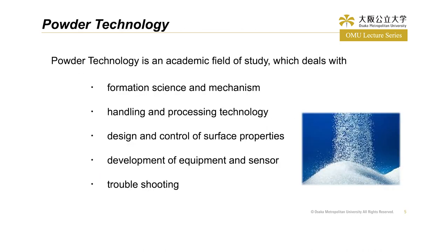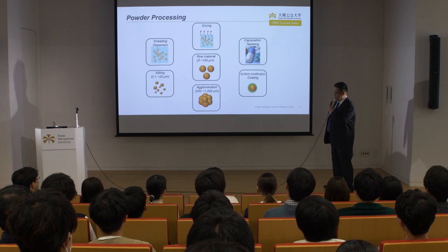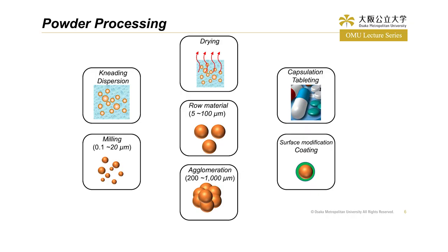Powder technology was born to understand the powder behaviors. Powder technology is the academic field of study which deals with formation science and mechanism, handling and processing technology, design and control of surface properties, and development of equipment and sensors. Also, powder technology deals with troubleshooting. As I explained, there are so many powder processing steps. In reality, if we want to make some powder product, we need to use several processes — for example, milling, mixing, agglomeration, drying, and so on. So we need to consider how to combine different kinds of powder processing in manufacturing.